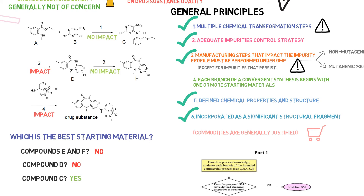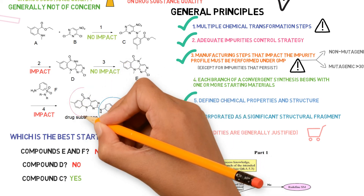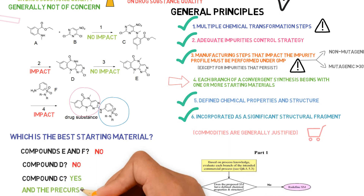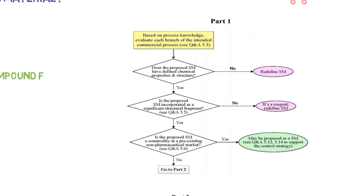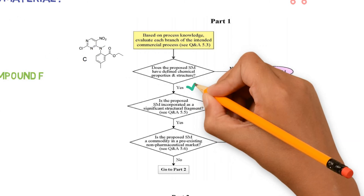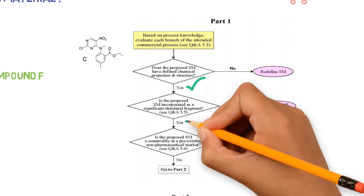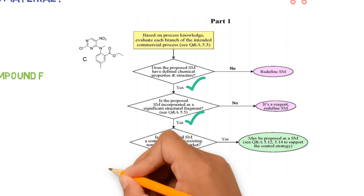However, this was shown to be a convergent synthesis, because two parts merge to form the drug substance. So actually, we need a second starting material, which would be a precursor of compound F. Now let's see if compound C satisfies the requirements described in the decision tree. It has defined chemical properties and structure. It is incorporated as a significant structural fragment. It is not a commodity, so we go to part 2.